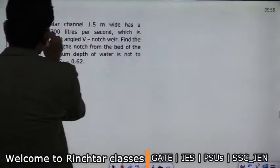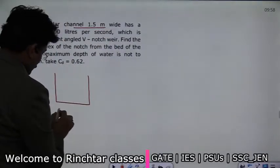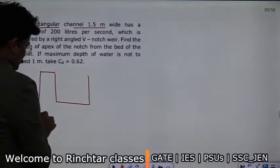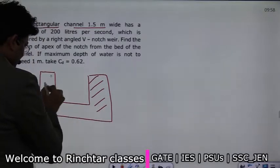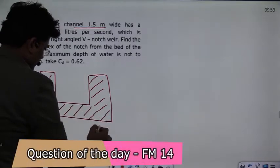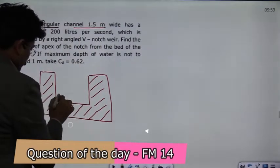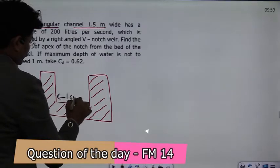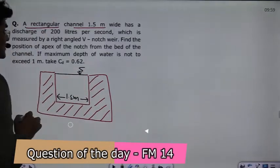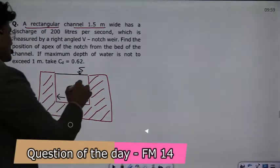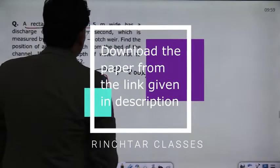Read the question: rectangular channel 1.5 meter wide. So question says that there's a rectangular channel. The channel width is given, this width is 1.5 meter. The discharge here from which water flows is equal to 200 liter per second, okay.